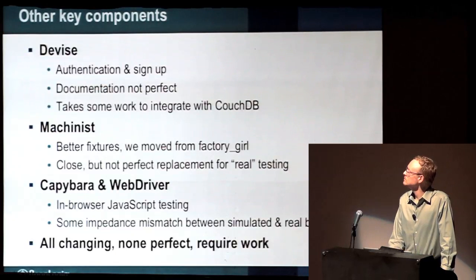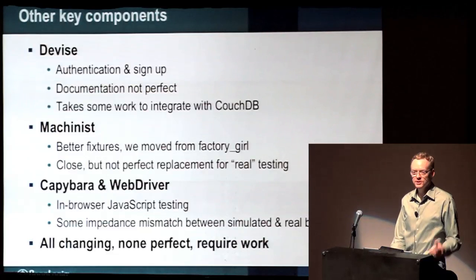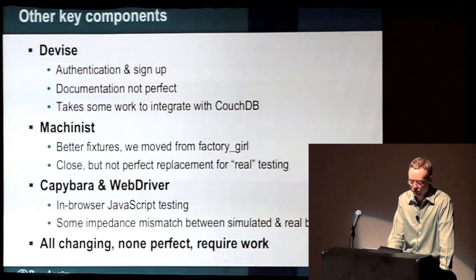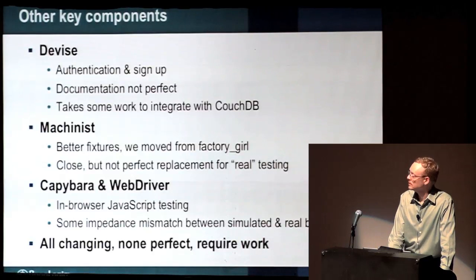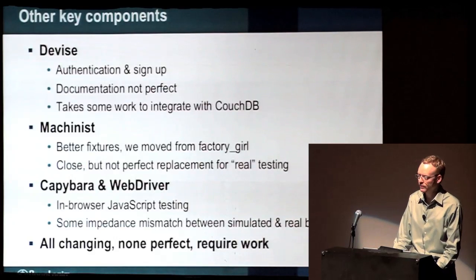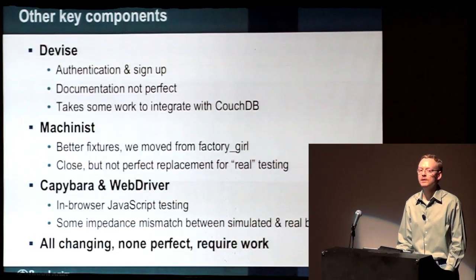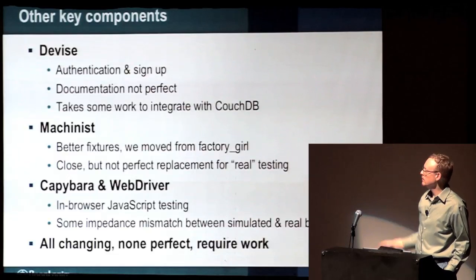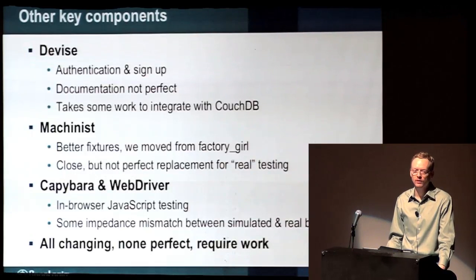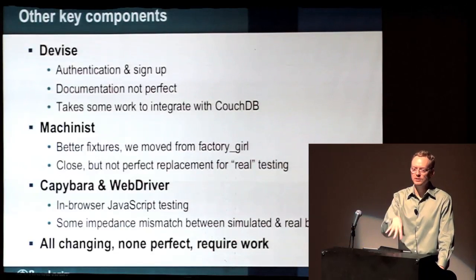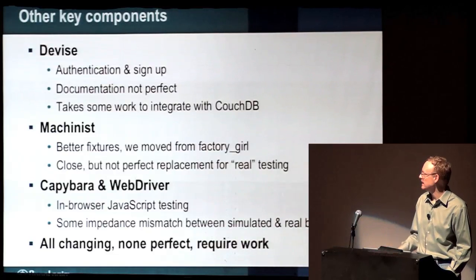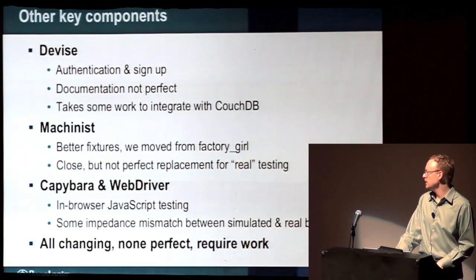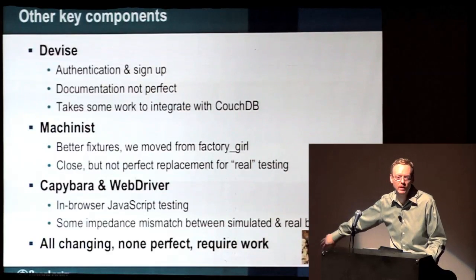Other tools we use: Devise — if you're not using it, it's really quite awesome for authentication and setup, supporting a zillion standards for OpenID and single sign-on. Documentation isn't perfect and it takes work to integrate with Couch, but we submitted patches back to the community to smooth things out. Machinist — a competitor to Factory Girl for better fixtures; we moved to it but it's close but not identical to real object testing. Capybara and WebDriver still have a little impedance mismatch with real browser testing. All of these are changing — not big bugs, but little bugs that take time.